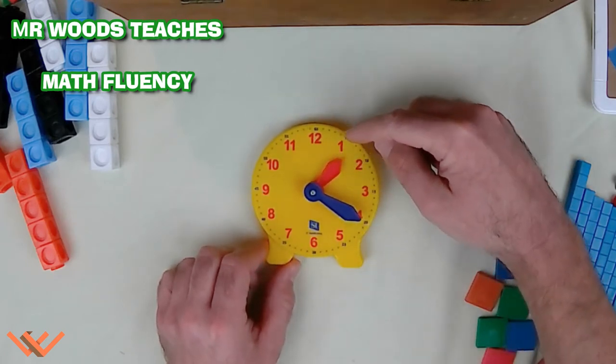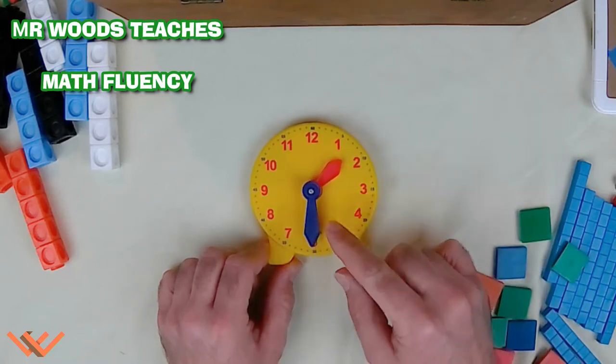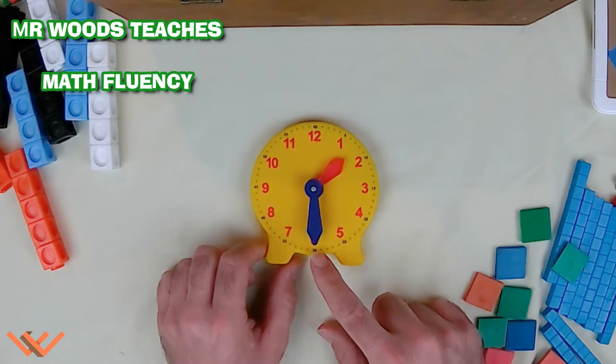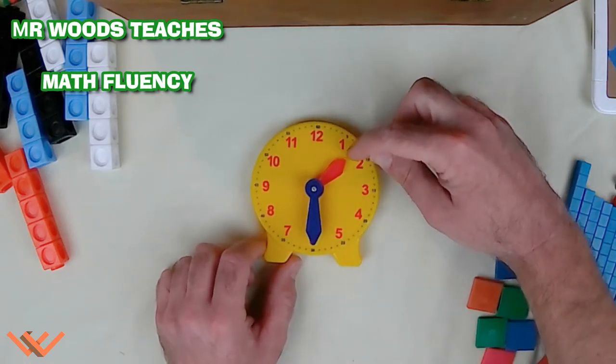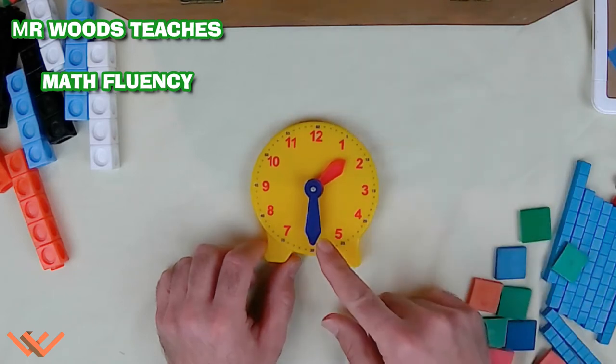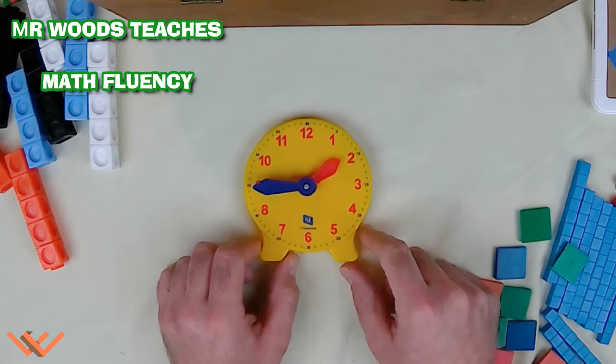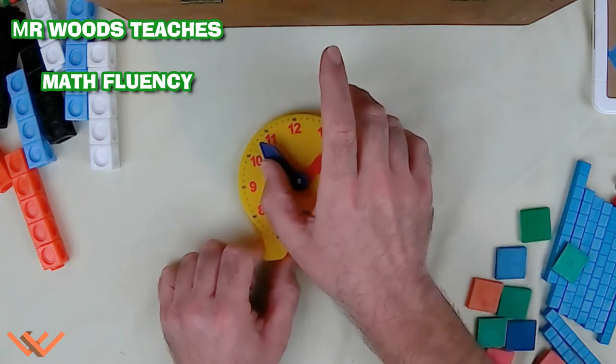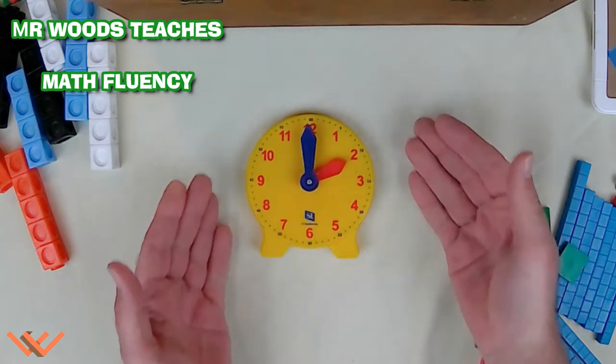Notice how the minute hand is getting closer to the 6. The hour hand starts going in between the 1 and the 2. And if we get it right here at 1:30 or 30 minutes after 1, that hour hand is directly in the middle. So, I can keep on manipulating this. Come over here to 1:45. See how it starts getting closer to 2 with the hour hand? And then as the minute hand reaches 12, it's 2 o'clock.